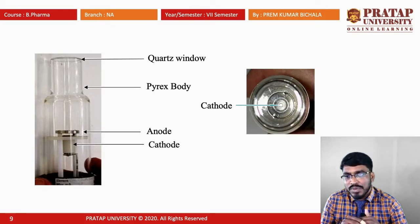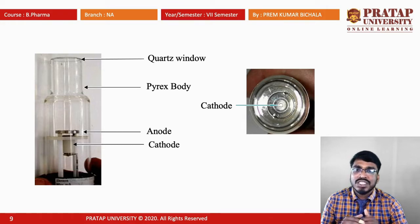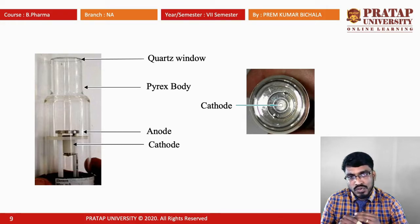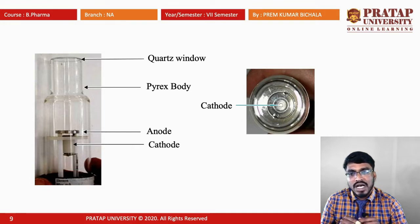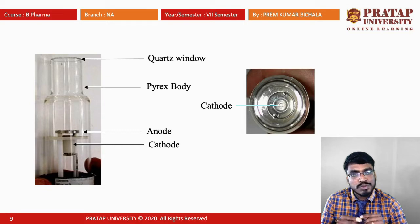This lamp consists of a quartz window, the pyrex body, anode, and cathode. Here a separate diagram of the cathode is given showing the internal arrangement of the cathode. That cathode is made up of the element which we are going to analyze.